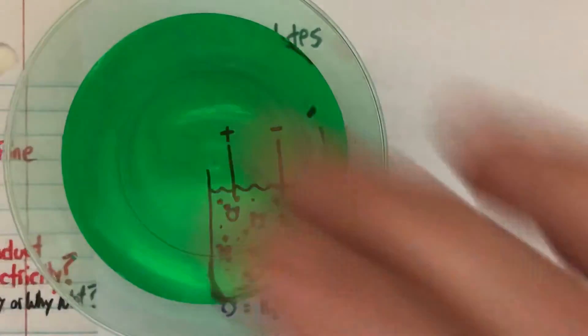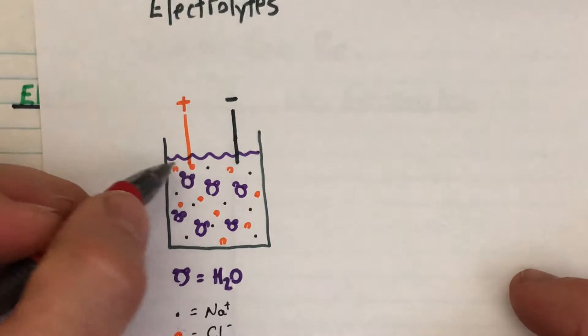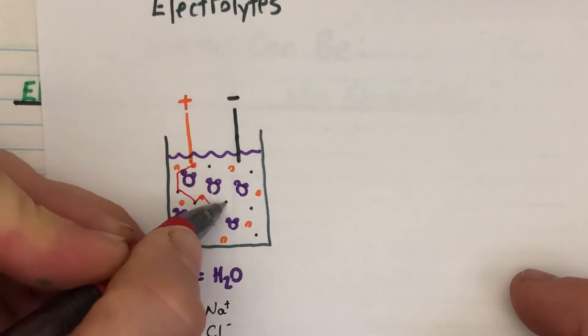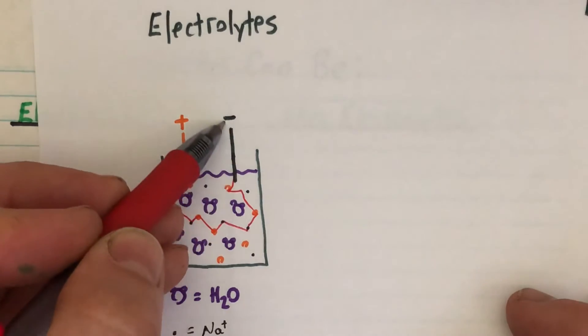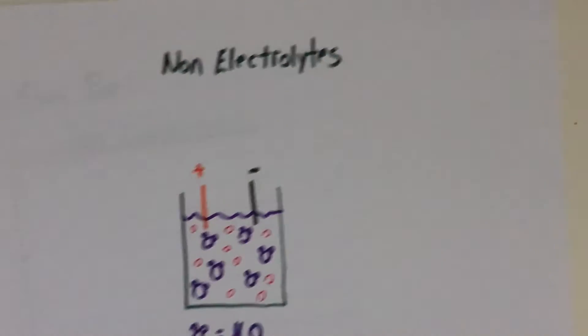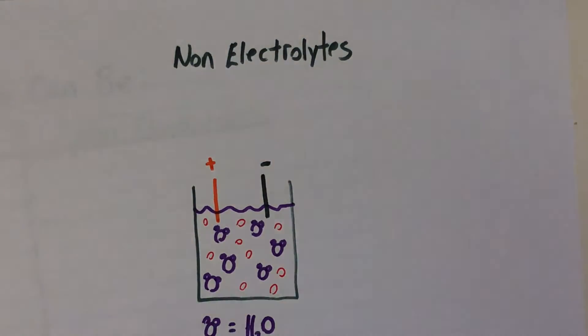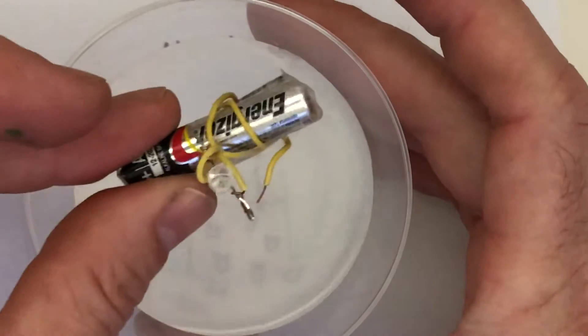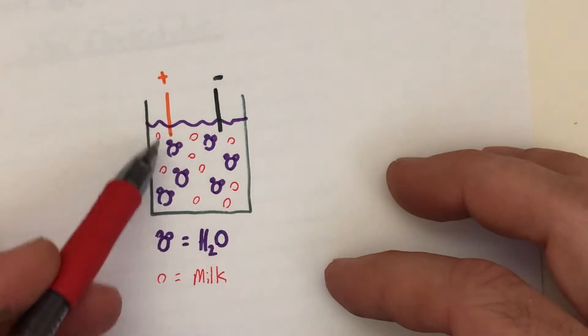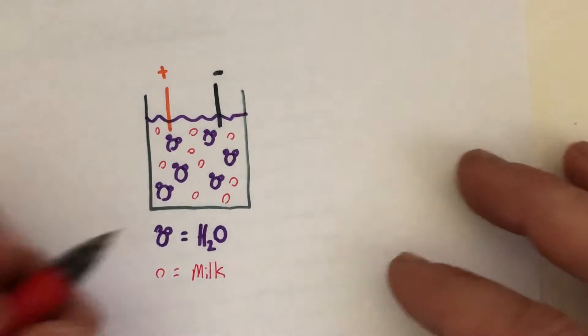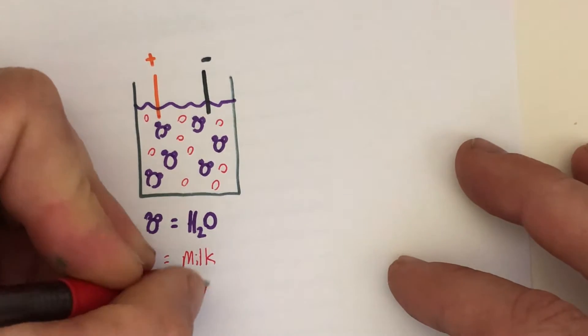The electricity is traveling from one electrode to the other using these ions as a pathway, and that's when we see the light come on. If we try that in milk, the light bulb doesn't come on. Electricity cannot travel from milk molecule to milk molecule because they are molecules — they don't have any charges on them, so they do not conduct electricity. They are non-electrolytes. Electrolytes are ionic compounds that break apart into ions and can carry electricity.